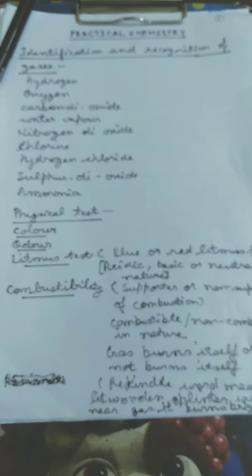Litmus test is being done by using blue or red litmus paper. These tests help in finding out whether the particular gas is acidic, basic or neutral in nature.